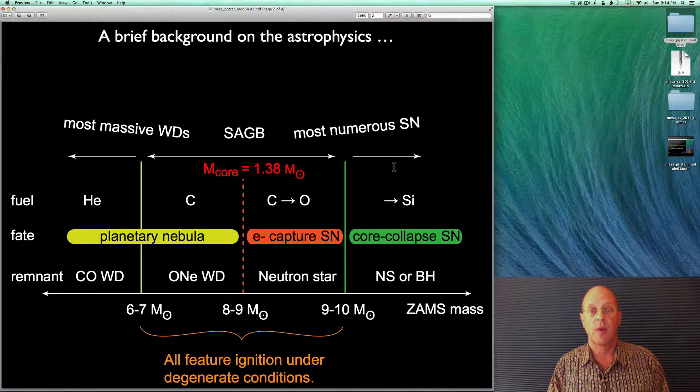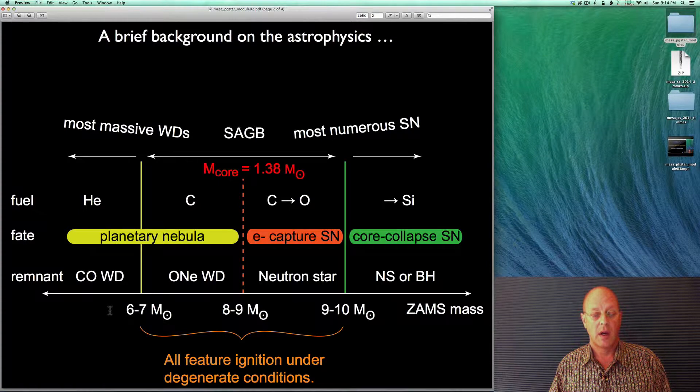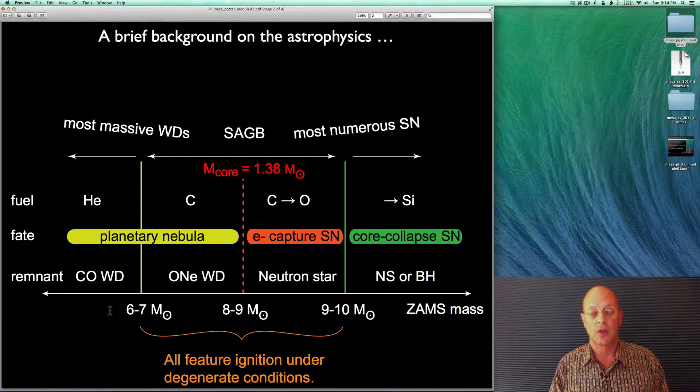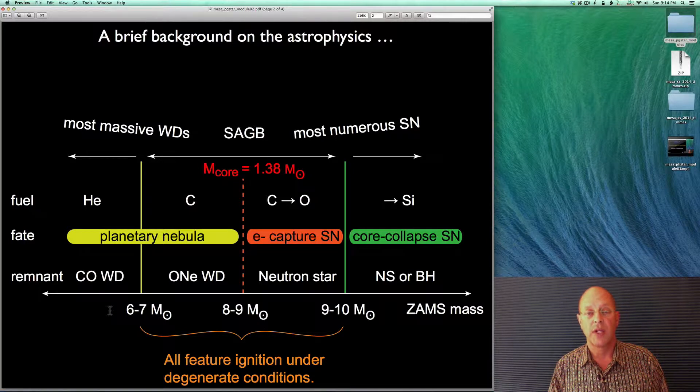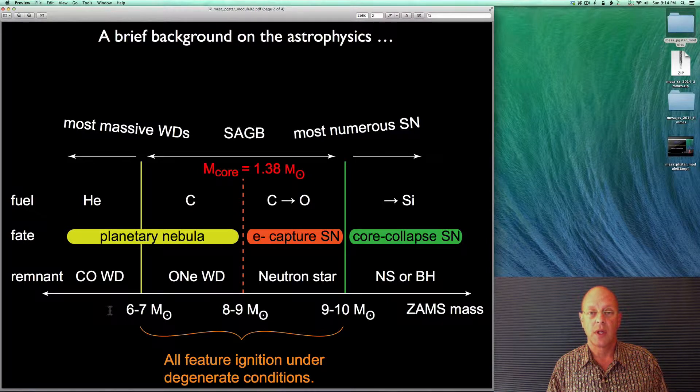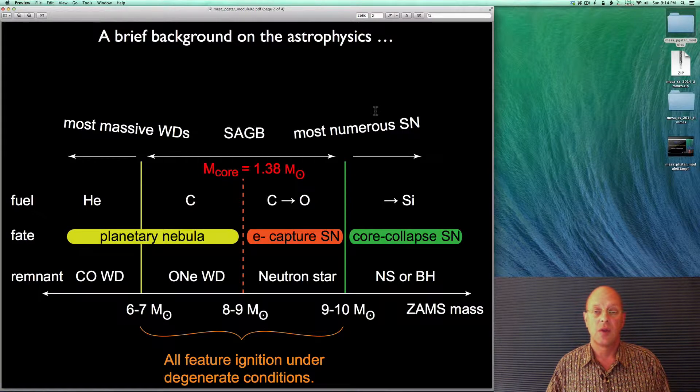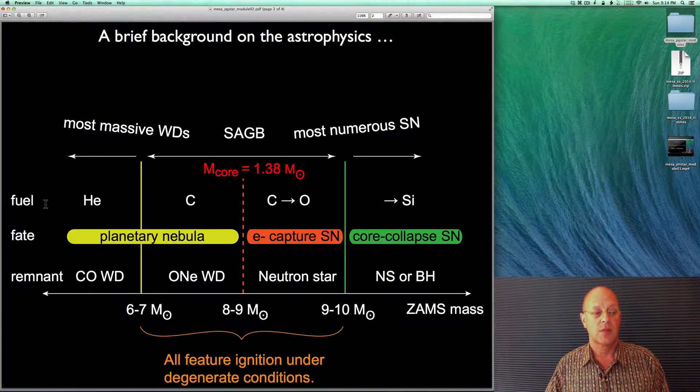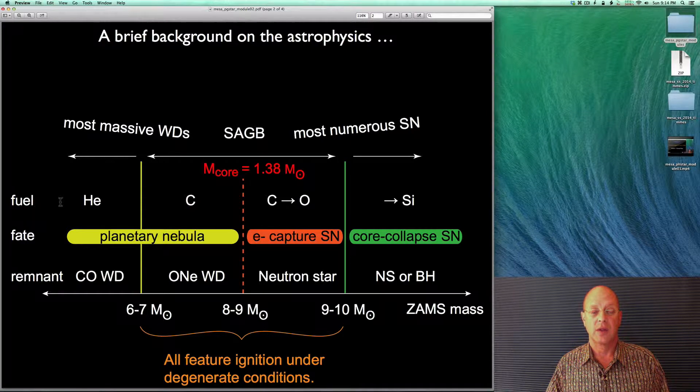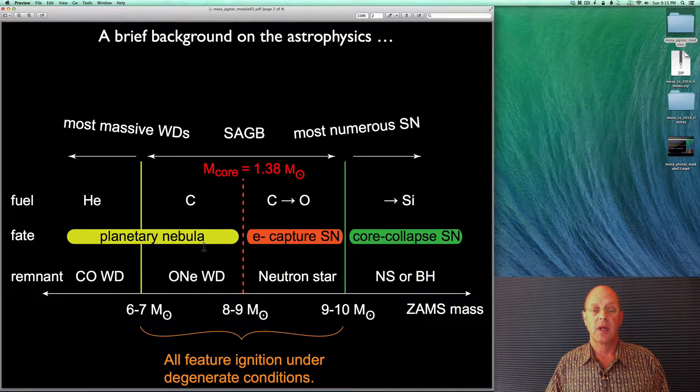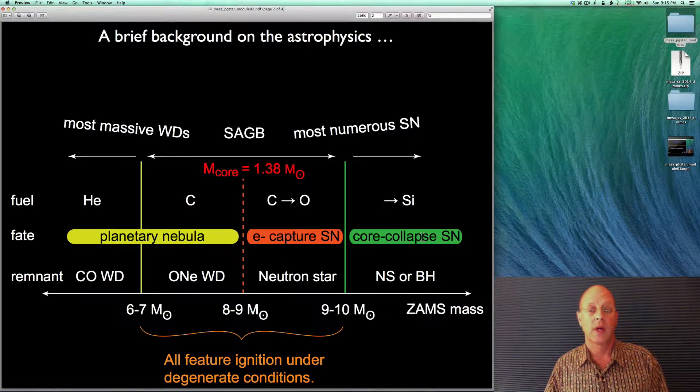This is sort of a global viewpoint of what is going on. Down here on this axis is the initial solar mass, anywhere from about six to about ten or so. All of these stars in this range are sometimes referred to as the super-AGB stars, and they're sort of that boundary region between stars whose final fate is to give the most massive white dwarfs and stars that give the most numerous supernovae. Stars in these regions burn different types of fuel depending on their mass. It could be helium, carbon, carbon oxygen, or silicon. And as a result, they have different fates from planetary nebula to electron capture supernovae to more traditional core collapse supernovae.